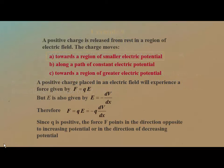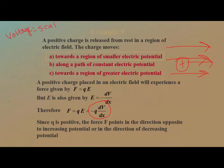Potential, or voltage, is a scalar quantity. It works exactly like electric potential energy — there is no direction associated with it. It's either a region of greater potential, which is positive, or an area of lesser potential, which is negative.